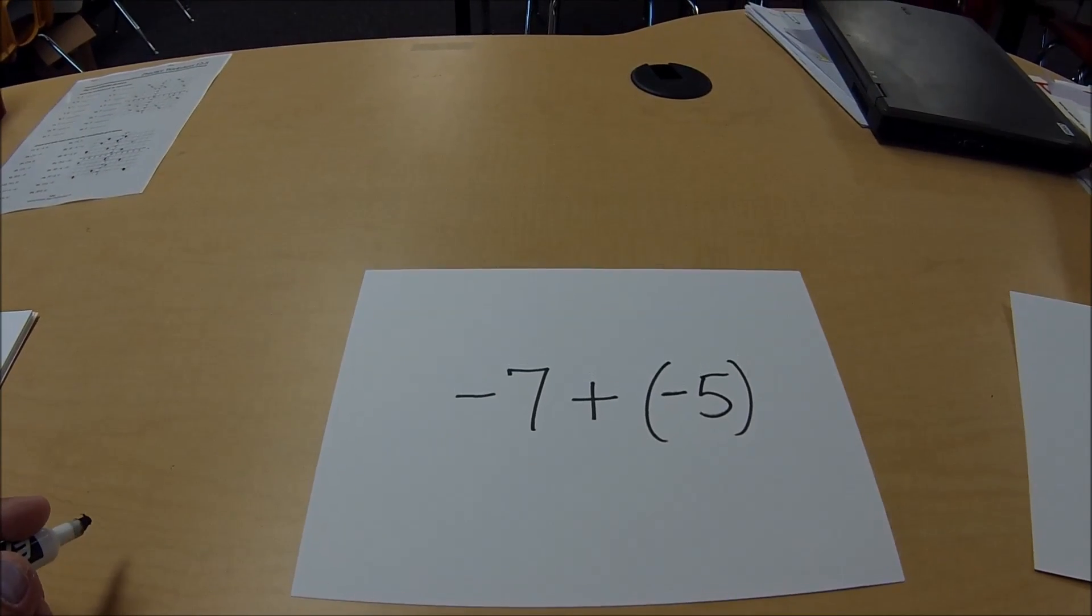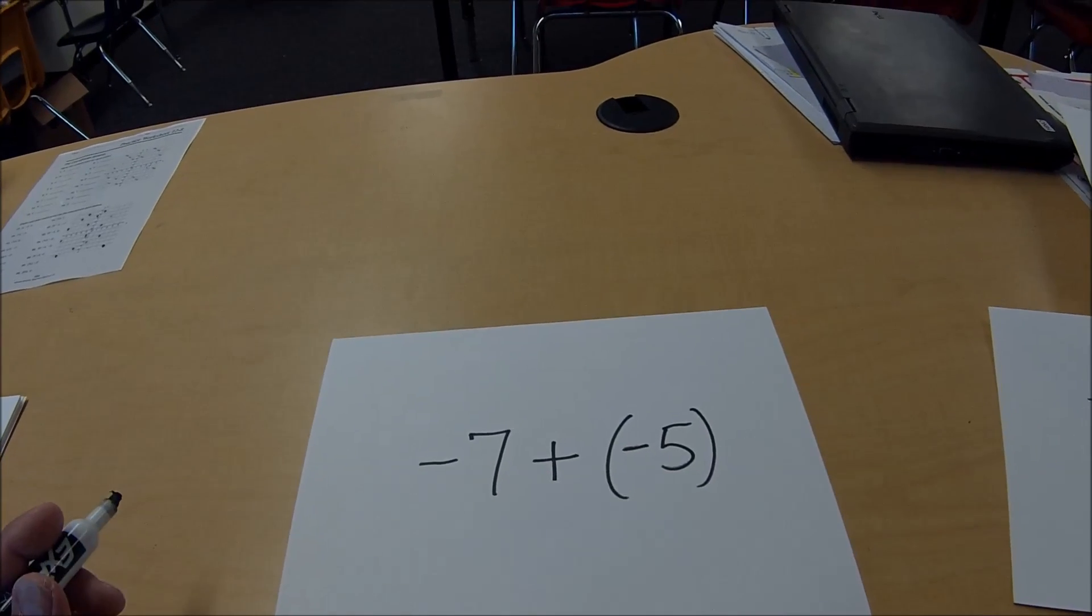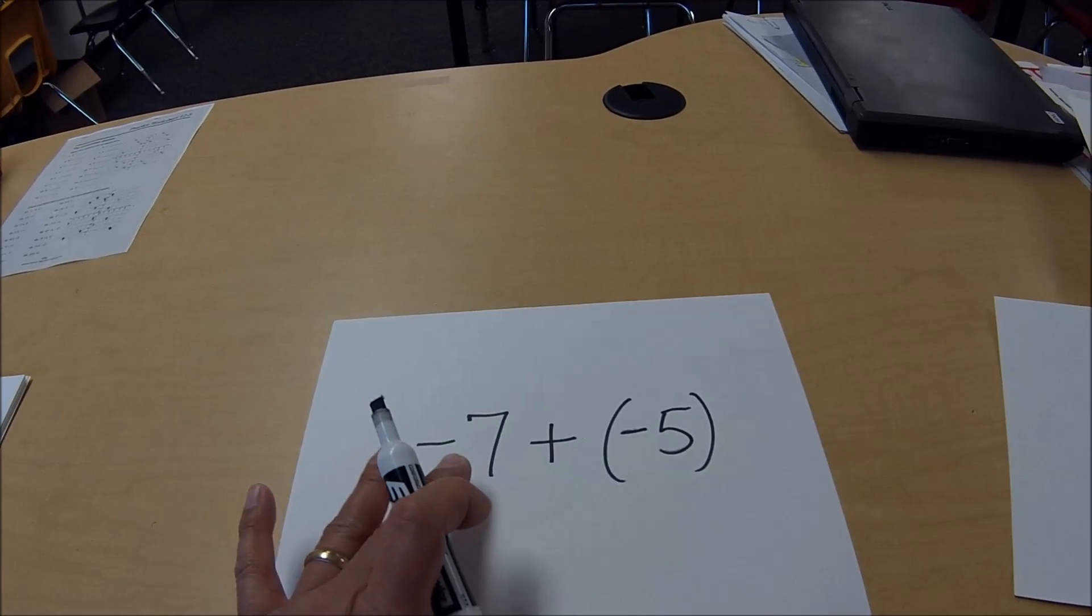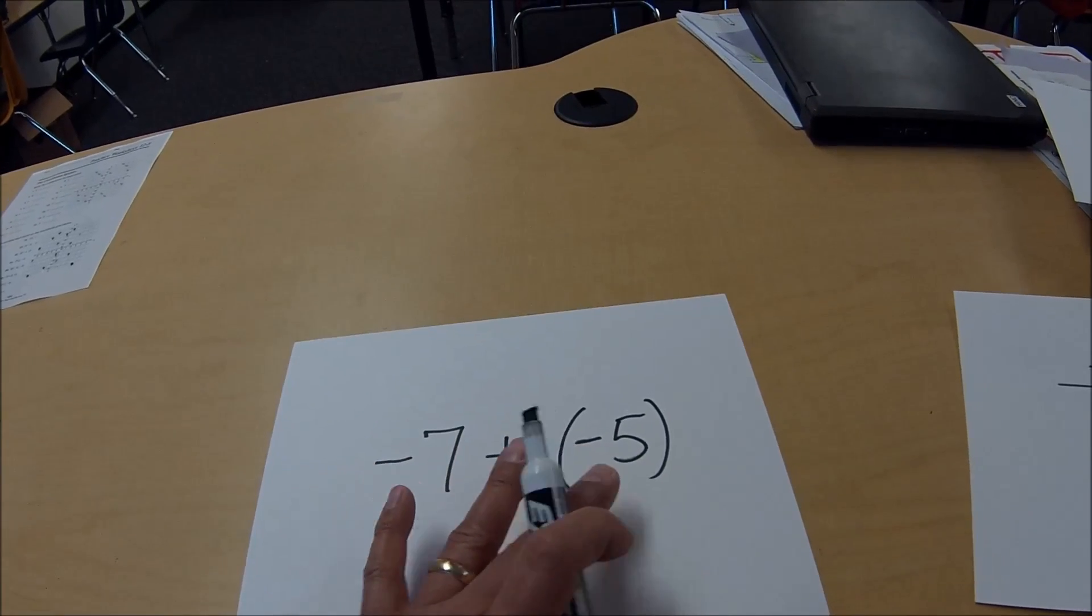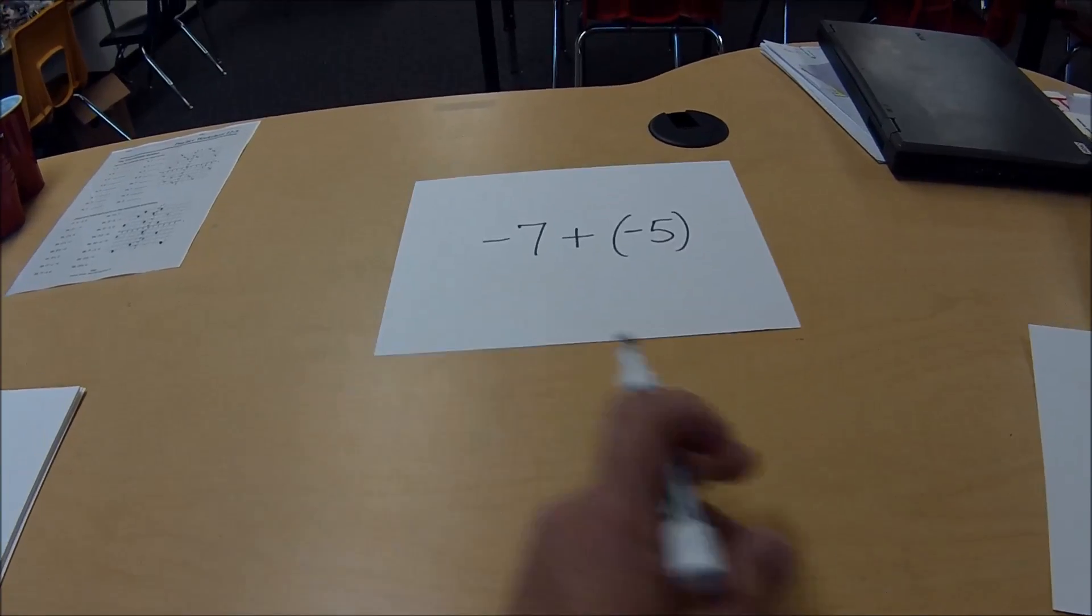Okay, so now let's look at what would you do if you were adding two negative integers. So if we have a negative 7 plus a negative 5, we can still use the t-chart to figure out the answer. So let's push this up here.